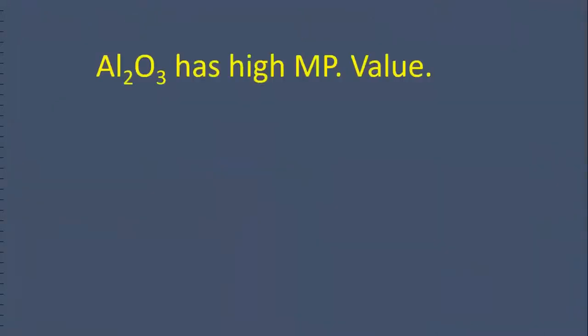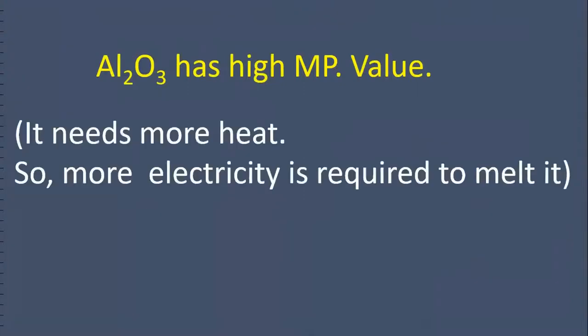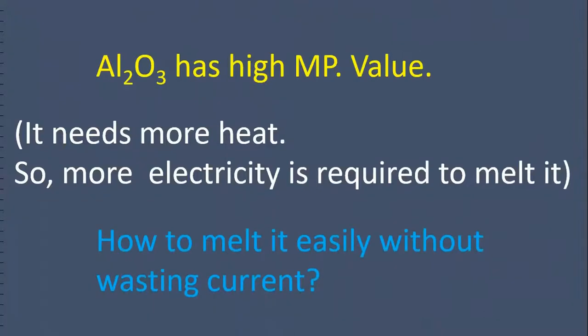Moreover, another problem. Al2O3 has a high melting point. It needs a very high amount of heat. So, more electricity is required to melt it. How to melt it easily without wasting current?